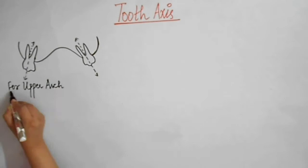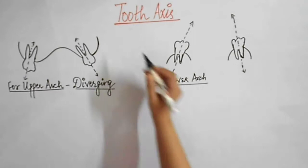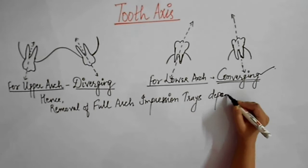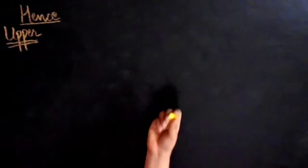We can see in this diagram that the tooth axis for upper arch is diverging, and the tooth axis for lower arch is converging. Hence, the removal of full arch impression trays depends on localization and number of prepared teeth.